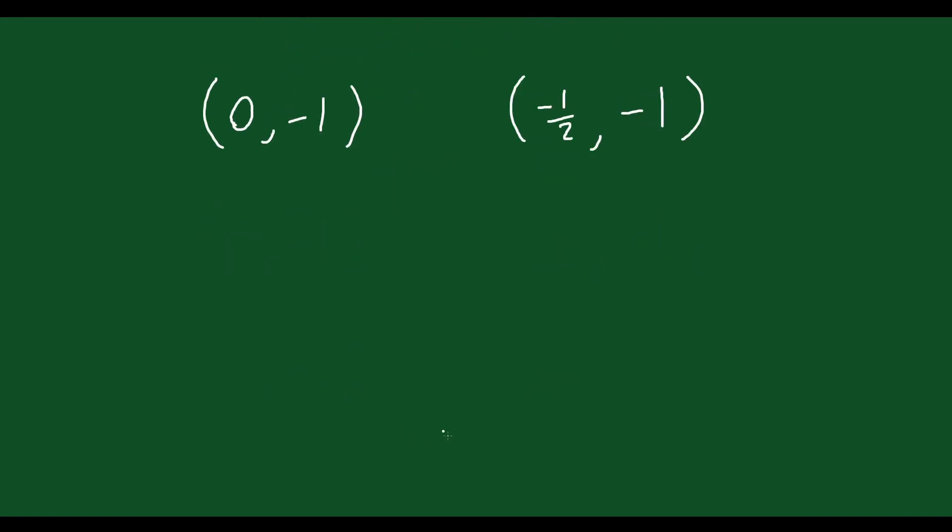Now, you might say, well, how are we any closer to getting to the vertex? Well, we're actually very close, because if you recall, all quadratics are symmetrical. If I were to draw a little sketch here of what we have so far, 0, negative 1 is right here. Negative 1 half, negative 1. Say this is negative 1 half, and it's at a height of negative 1 like that.